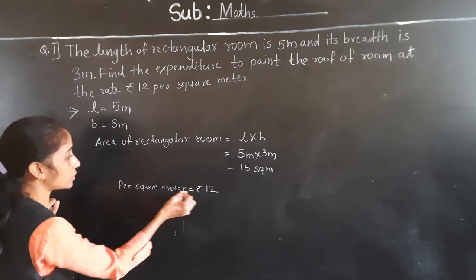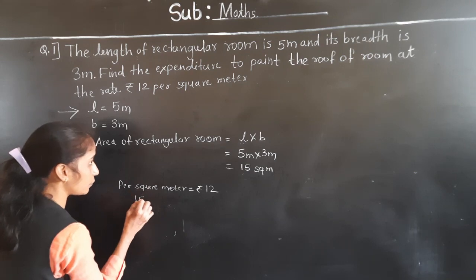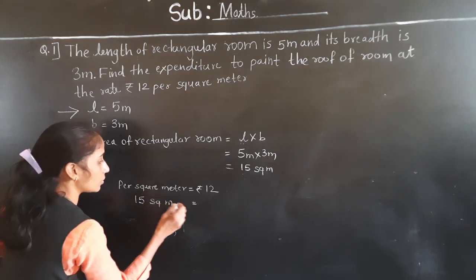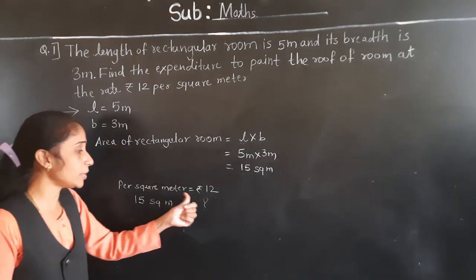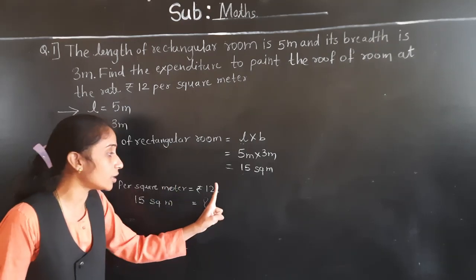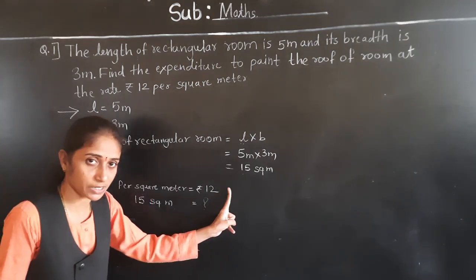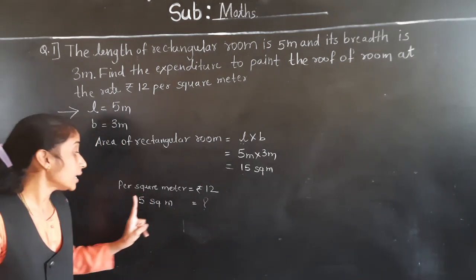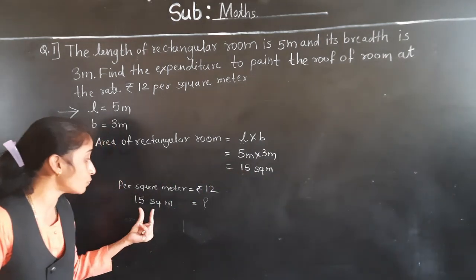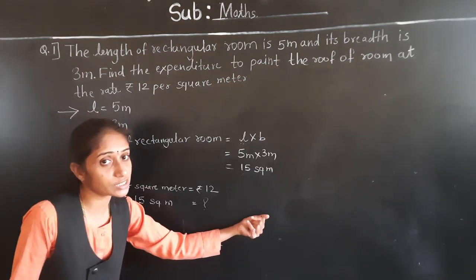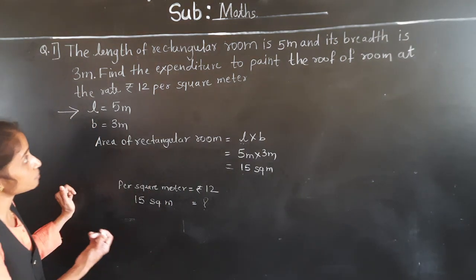Per square meter, the rate is rupees 12. For 1 square meter, rupees 12 is the expenditure to paint. We got 15 square meters of area for the room. So for 15 square meters, what are the charges? We need to multiply to get the expenditure.